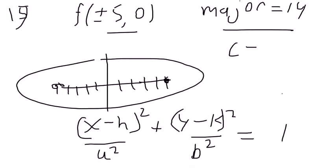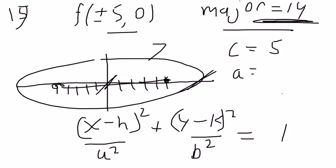Okay, well I know my c is going to be 5 and the major axis length is the length from here to here. If that's 14, then from my center to my vertex is going to be 7, so a equals 7.